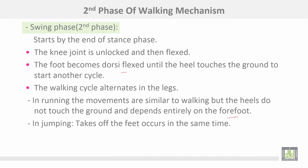The second phase or swing phase starts by the end of the stance phase. The knee joint is unlocked and then flexed. The foot becomes dorsiflexed until the heel touches the ground to start another cycle. The walking cycle alternates in the legs. In running, the movements are similar to walking but the heels don't touch the ground and it depends entirely on the forefoot. In jumping, take-off of the feet occurs at the same time.